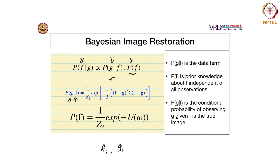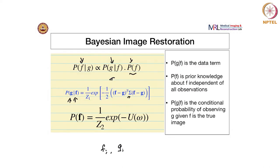If you look at this expression, it is a Gaussian, but G and F are vectors written with sigma as the covariance matrix. F minus G can be written as some epsilon, and P(G|F) becomes 1/Z times exponential of minus epsilon-transpose sigma epsilon, leaving out some normalization terms.